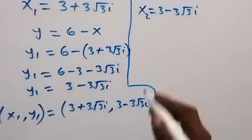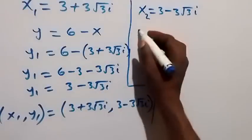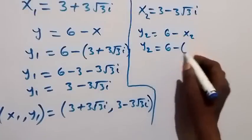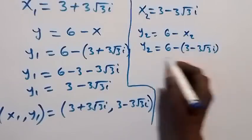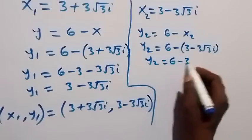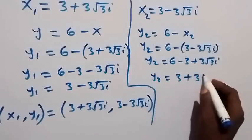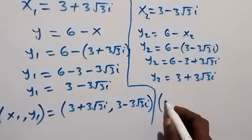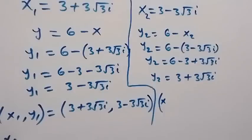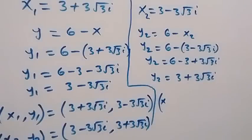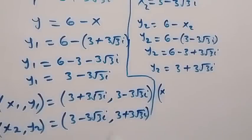On this side as well, we can find the value of y2. From this relation, y2 will then be equals to 6 minus x2. And y2 will then be 6 minus the bracket 3 minus 3 root 3 i. And then we have y2 now equals to 6 minus 3 plus 3 root 3 i, which is y2 equals to 3 plus 3 root 3 i. So the second set of solutions, x2, y2 equals to: 3 minus 3 root 3 i, comma, 3 plus 3 root 3 i. The value of x in one solution is the value of y in the other.